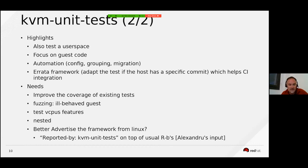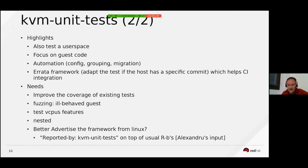We also have crying needs: we need more fuzzing tests, we need to test more vCPU features, there is nested support coming, we need to improve the coverage of existing tests, and perhaps we should think about better advertising the framework from Linux — for example by adding a tag 'Reported by KVM unit tests' to improve visibility and give credits.